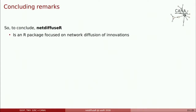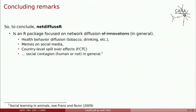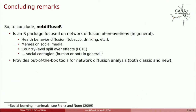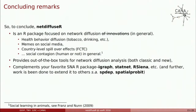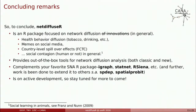Concluding remarks: NetDiffuser is an R package focused on network diffusion — diffusion in general — so you can apply it to health behavior diffusion (at USC we do tobacco, drinking, etc.), memes on social media where you can handle big graphs, controlled spillover effects (a paper we're working on), and social contagion, human or not, in general. It provides out-of-the-box tools for network diffusion analysis, both classic and new. It complements your favorite SNA package — iGraph, StatNet, or RSiena — and we're working to extend it to other R packages like spdep and spatial probit for spatial autoregressive models. It's under active development, and I'm basically being paid to do this all day, so I'm having a lot of fun.